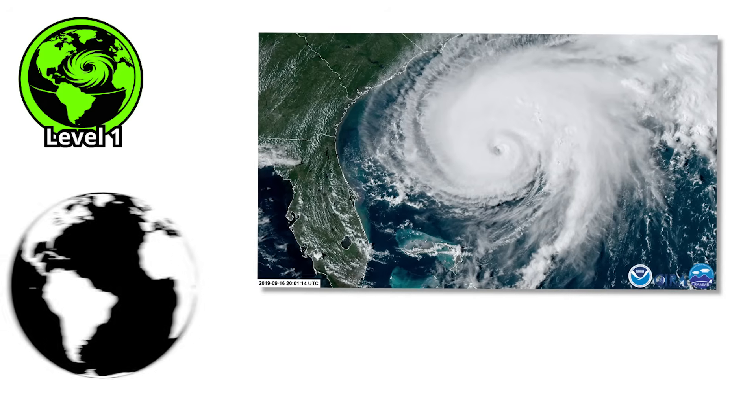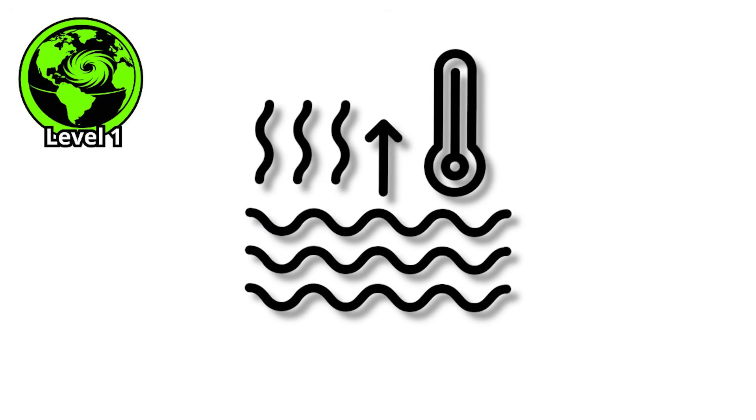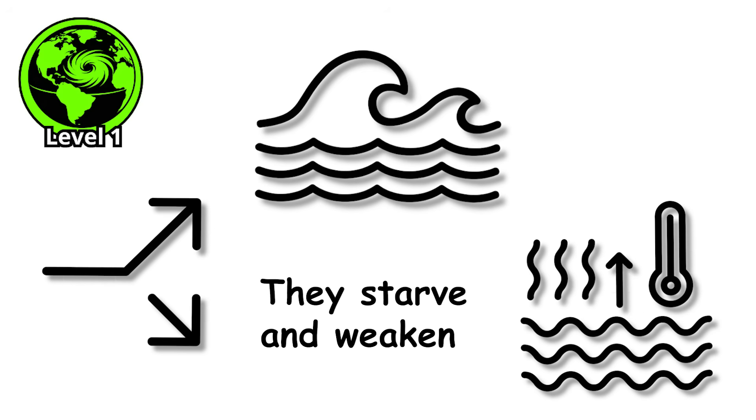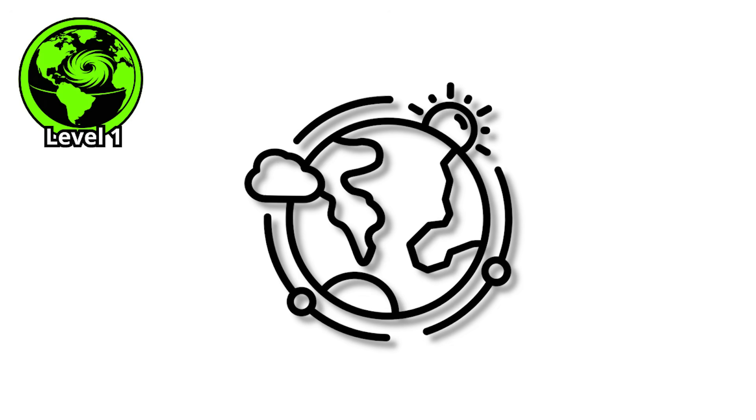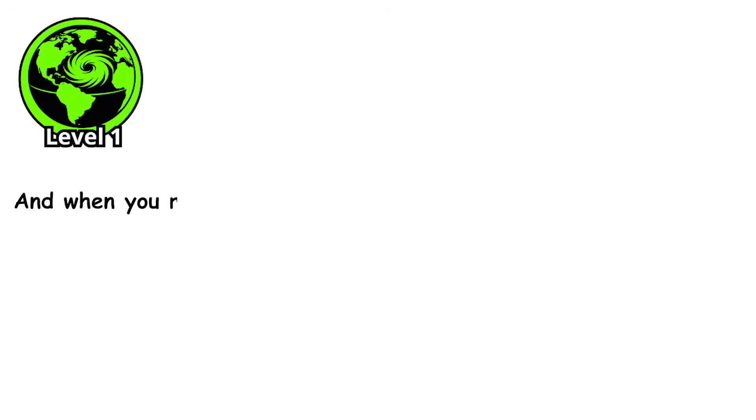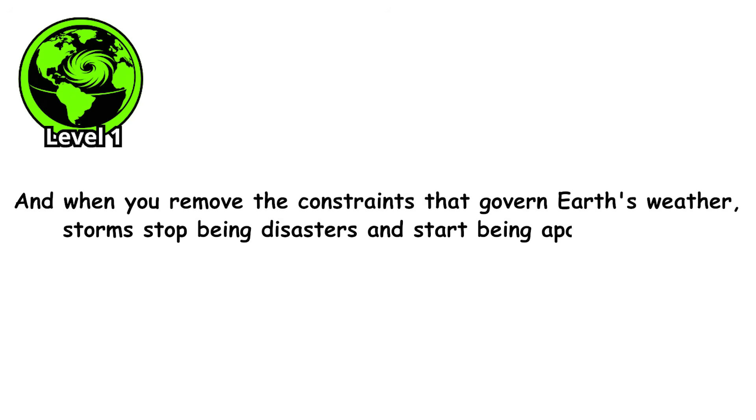But here's the thing about Earth's hurricanes. They're limited. They need warm water to survive, so when they drift over land or cooler ocean, they starve and weaken. Our atmosphere is thick enough to create these beasts, but also structured enough to contain them. Other planets don't have these limitations. And when you remove the constraints that govern Earth's weather, storms stop being disasters and start being apocalypses.